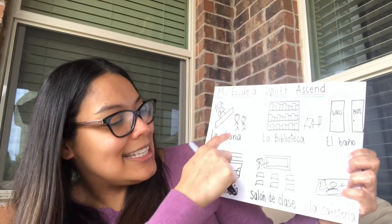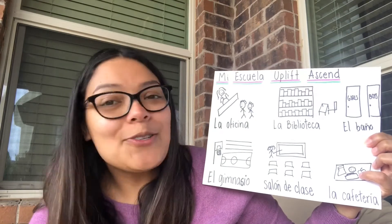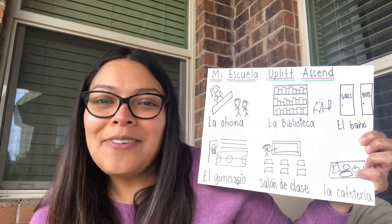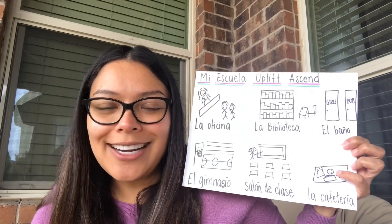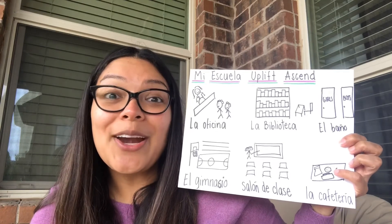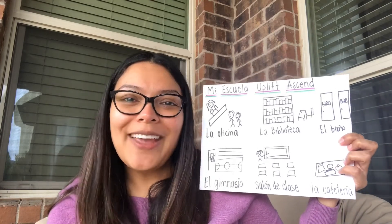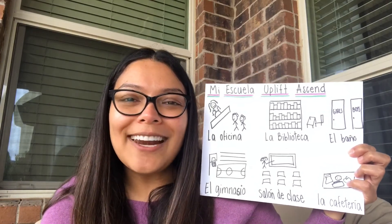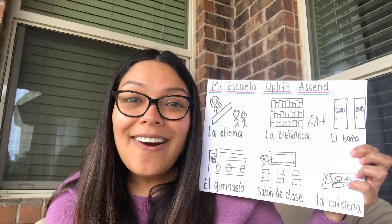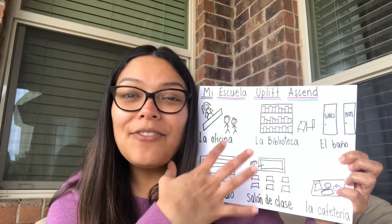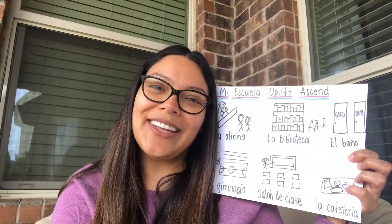Ahora ya tienes seis lugares. Now we have six places in our school. Quiero que los practiques. Y en nuestro próximo video veremos el resto. So I want you to practice these six words. And in our next video we are going to have more places in our school. Espero que te encuentres bien. Mándame fotografías de tu trabajo. Y nos veremos en un próximo video. So this is the end of this video. I hope that you enjoyed it. Please send me pictures of your drawings. And I will see you in our next video. Adiós.